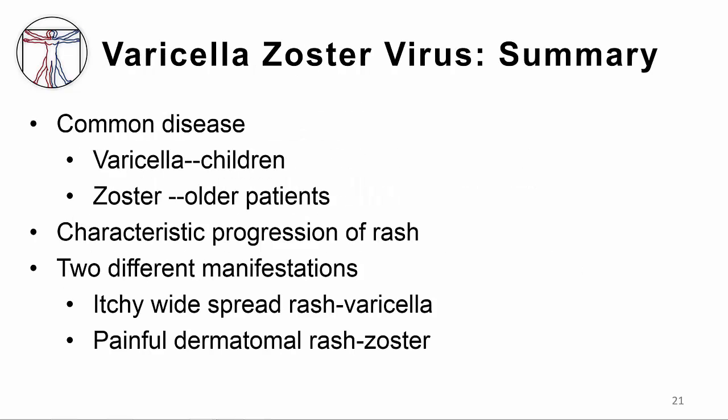In summary, disease caused by VZV is common and has different manifestations for primary and reactivation disease. The rash has a characteristic progression from papule to vesicle, cloudy vesicle, to crusting. Varicella is a disease of children who get a widespread itchy rash — this is primary infection. Zoster is a disease of older patients who develop a painful, localized rash — this is reactivation disease.